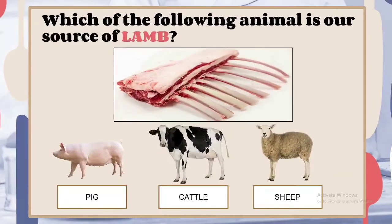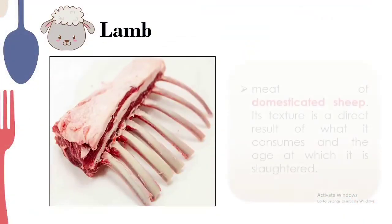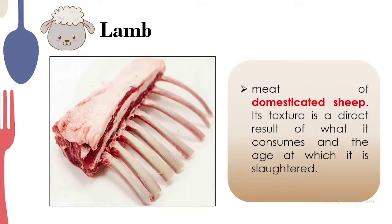Which of the following animals is our source of lamb — pig, cattle, or sheep? Lamb came from domesticated sheep. Its texture is a direct result of what it consumes and the age at which it is slaughtered. Lamb has firm and well-marbled meat. It is popular in the Middle East and some parts of Europe, prized for its distinctive flavor, freshness, and tenderness. You can identify fresh lamb when the color is light pink to light red. In the Philippines we don't often see lamb in public markets, but in other countries it is an alternative to beef.